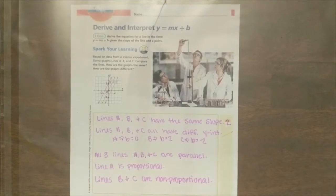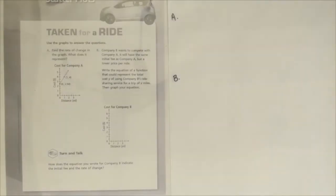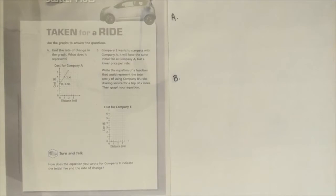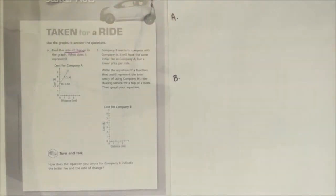Now, we're going to save this turn and talk for the end of our activities. Next, let's look at taken for a ride. This activity says use the graphs to answer the questions. Problem A says find the rate of change in the graph. What does it represent? Earlier, we reviewed that the rate of change is our slope. So we're going to find the slope of this graph.